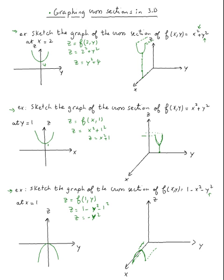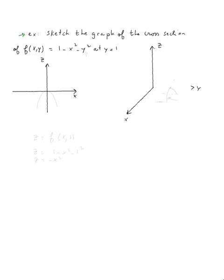Last example: sketch the graph of the cross section of f(x,y) = 1 - x² - y² at y = 1. That would be z = f(x, 1), where y = 1 and x can vary. Wherever we see y, we plug 1: z = 1 - x² - 1², which means z = -x².